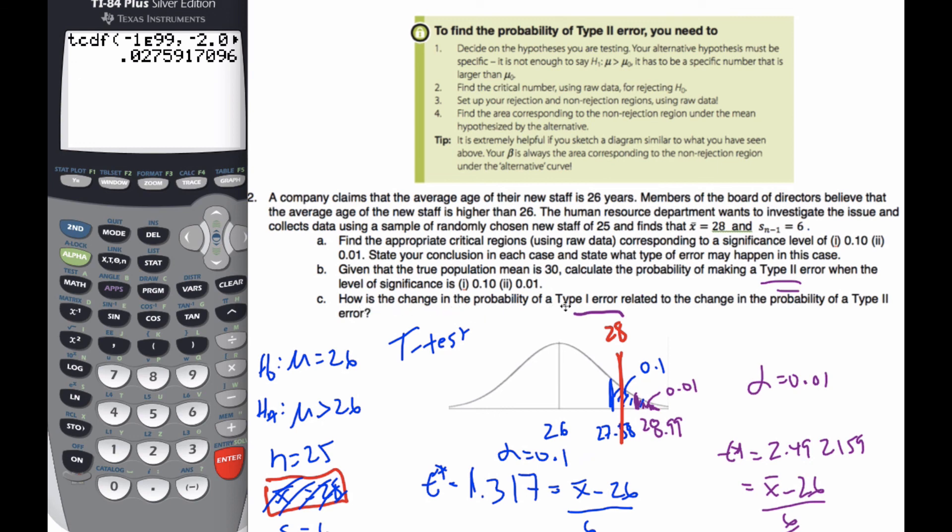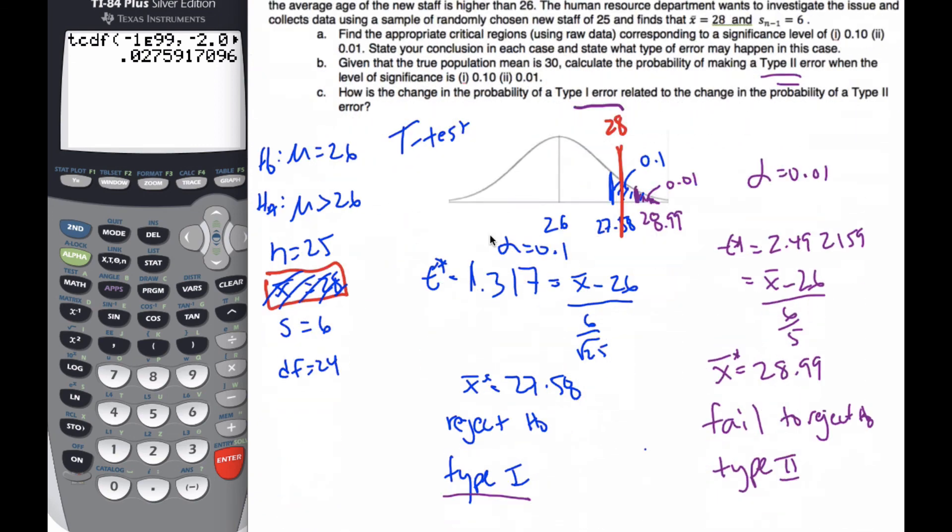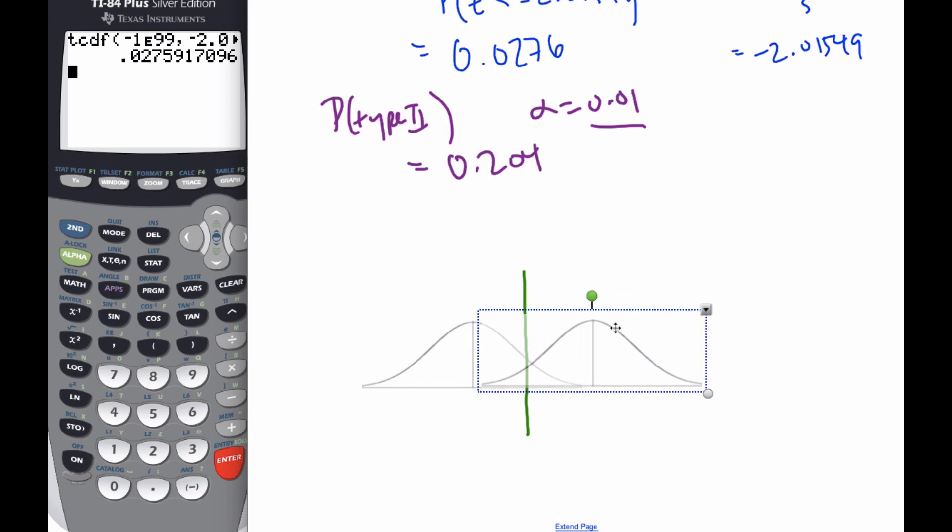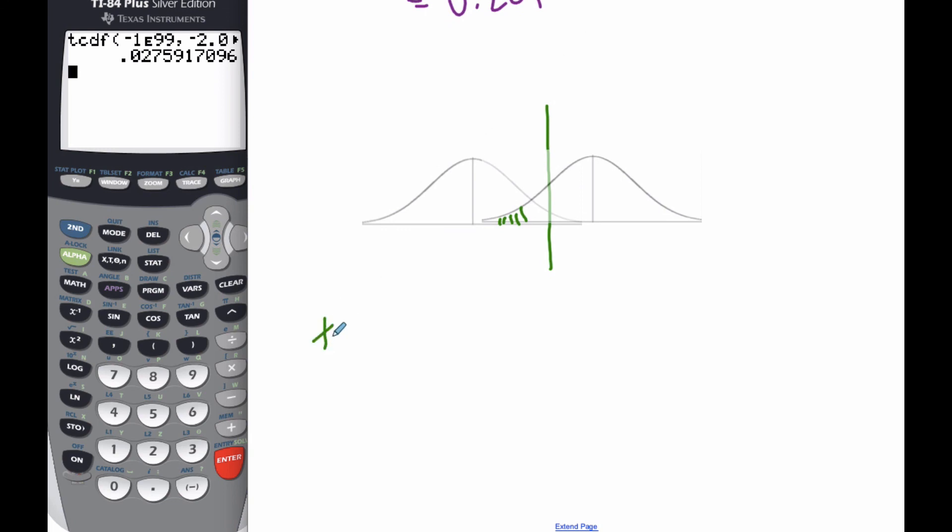Part C: How does the change in probability of a Type 1 error relate to the change in probability of a Type 2 error? If I make a picture, here is my boundary for Type 1 error. If I take it and move it, this makes my Type 1 error smaller. Here's my second potential curve, and this area is Type 2. If I move my Type 1, Type 1 gets smaller but Type 2 increases. So if you decrease Type 1, then Type 2 increases and vice versa.